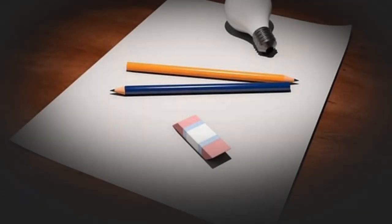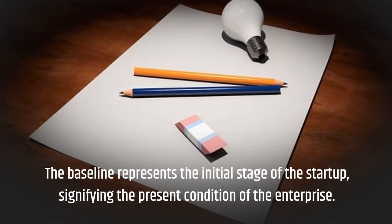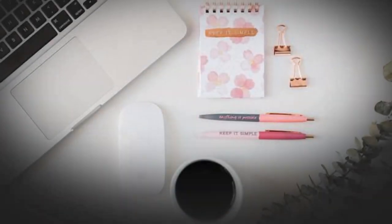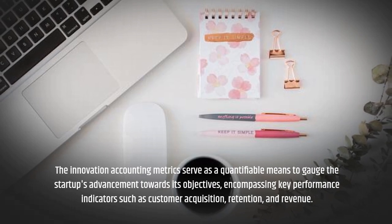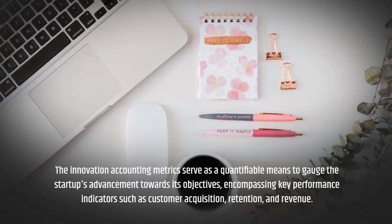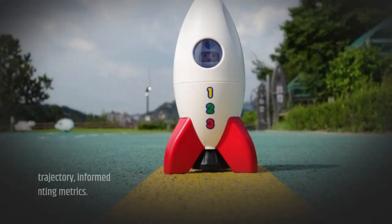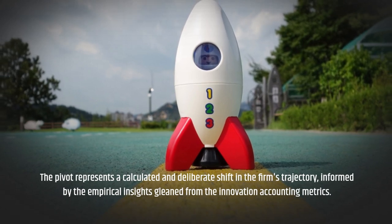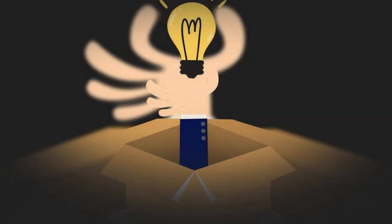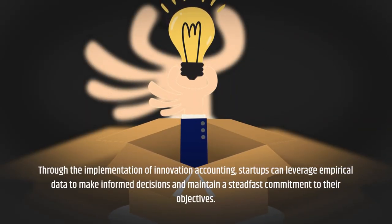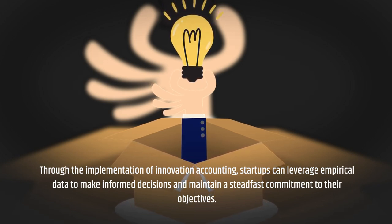The baseline represents the initial stage of the startup, signifying the present condition of the enterprise. The innovation accounting metrics serve as a quantifiable means to gauge the startup's advancement towards its objectives, encompassing key performance indicators such as customer acquisition, retention, and revenue. The pivot represents a calculated and deliberate shift in the firm's trajectory, informed by the empirical insights gleaned from the innovation accounting metrics. Through innovation accounting, startups can leverage empirical data to make informed decisions and maintain a steadfast commitment to their objectives.